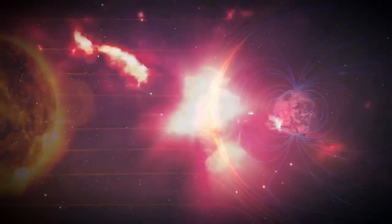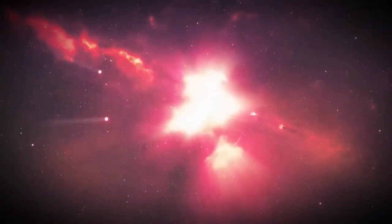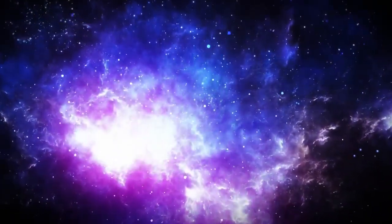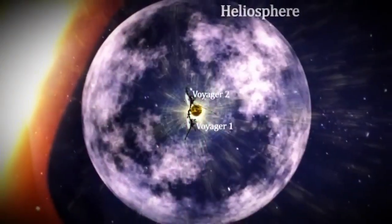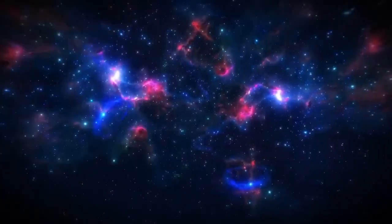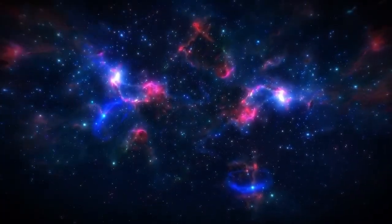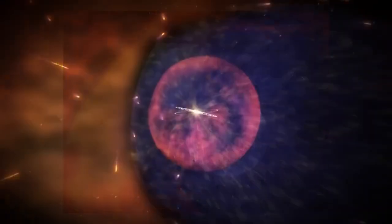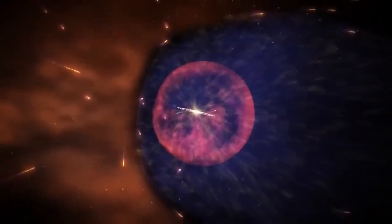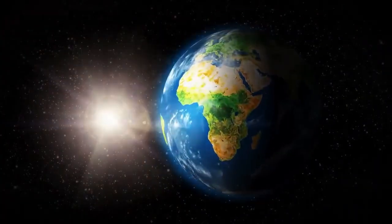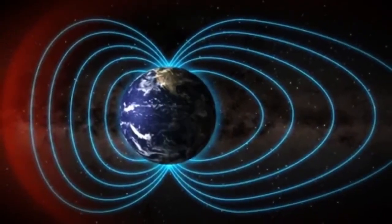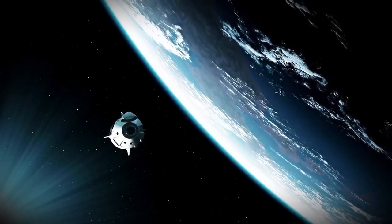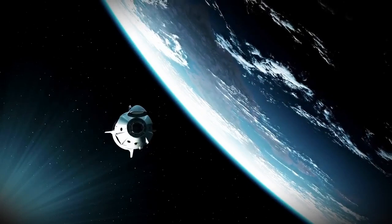In November 2018, Voyager 2 crossed the heliopause for the second time, after its twin, Voyager 1. The heliopause is a line where the interstellar medium, or substance that fills the space between stars, and the solar wind, or charged particles released by the sun, meet. Voyager 2 saw a dramatic decrease in solar wind particle density and an increase in interstellar particle density when it passed this limit. This verified that the spacecraft had left the heliosphere, the bubble-like area where the sun's effect is most noticeable.